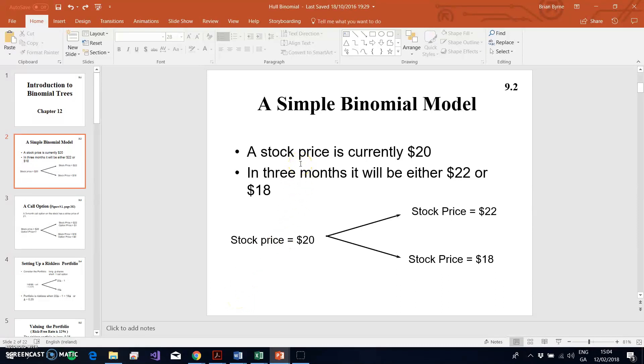In the previous video we looked at the most basic type of binomial tree proposed by Cox, Ross, and Rubenstein. We took the tree down to just a very simplistic one-step unit and discussed how the stock price may go up either to 22 or go down to 18.